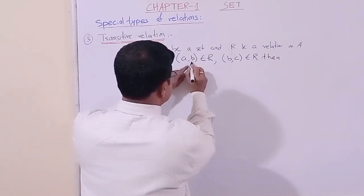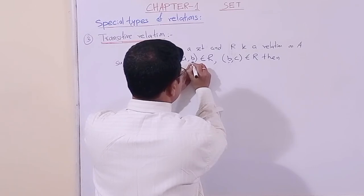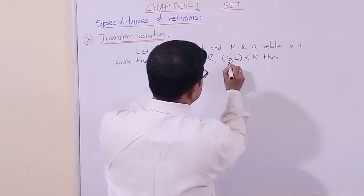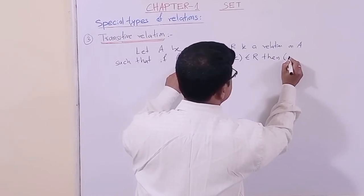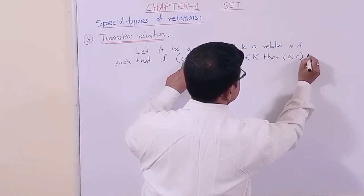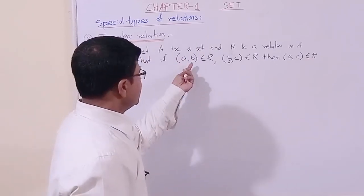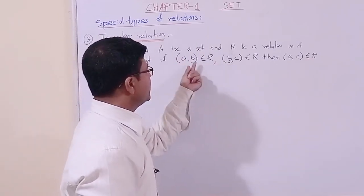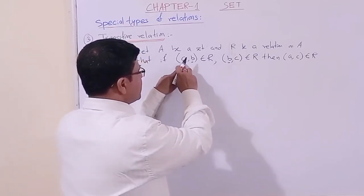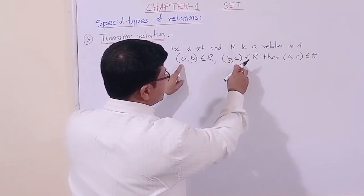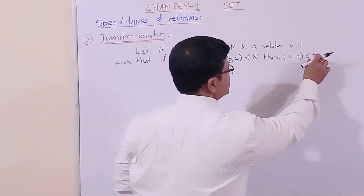So, if (a,b) is present and (b,c) is present — where b is common — then (a,c) must also be present in R. In some cases, if only (a,b) is present and there is no (b,c), then we do not need to check whether (a,c) is present or not. In that case, the relation can still be transitive.